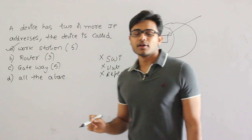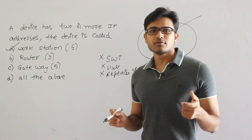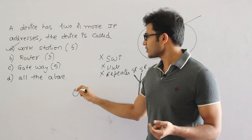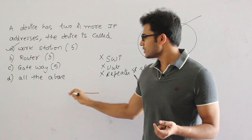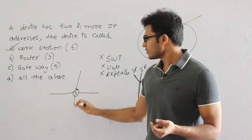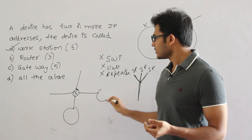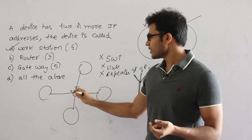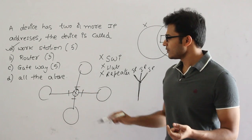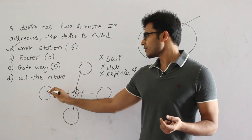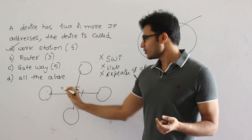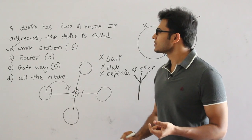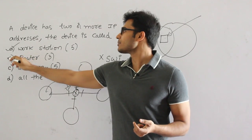What about a router? A router will also get one IP address for every interface. For example, if you have a router with multiple interfaces, on every interface we get an IP address. Every interface will get an IP address, and it is generally a convention that the IP address will be taken from the network to which it is connected, and one IP address will be assigned. Therefore, a router will also get more than one IP address.